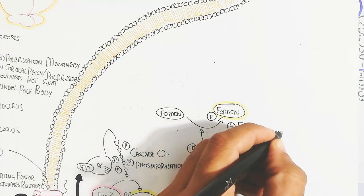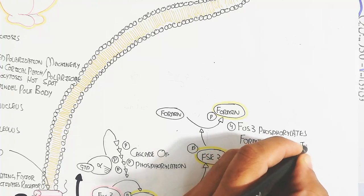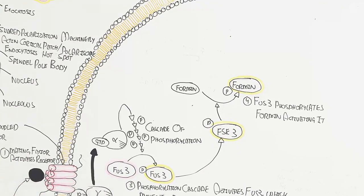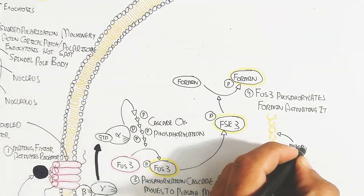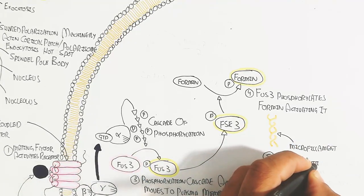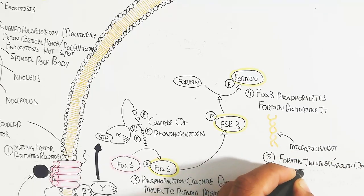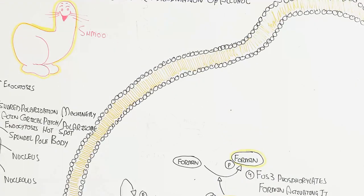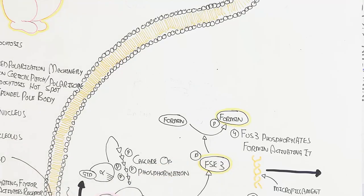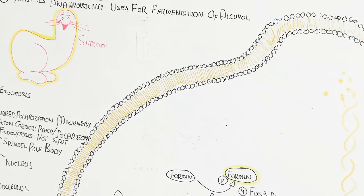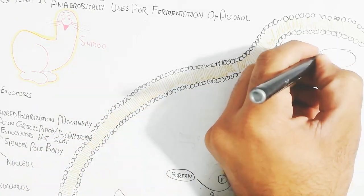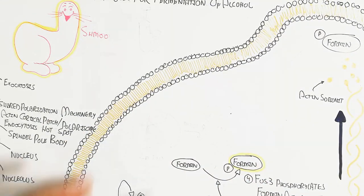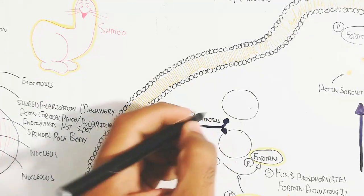Step five is formin initiating growth of microfilaments that form the shmoo projection. Microfilaments are present in the shmoo projection in this way. The actin subunits bind further, and the formin protein repeatedly binds actin subunits. This chain of polymerization leads to the outward shmoo projection used for sexual reproduction.